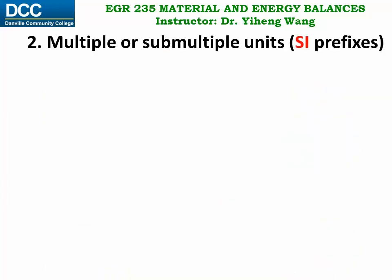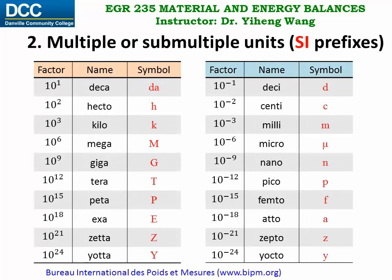We can make the units bigger or smaller by adding a standard SI prefix to the unit. The proportional factors, the names of the prefixes, and their respective symbols are given in this table. We are already very familiar with many of the prefixes. For example, a kilometer is a thousand meters and a centimeter is one hundredth of a meter. However, please be reminded that for mass, kilogram is the base unit in the SI unit system, not gram.